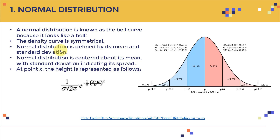The standard deviation is basically the dispersion from the mean — how the curve is dispersed around it. If you have a very small standard deviation, all the data accumulates around the mean. If you have a large standard deviation, the data is dispersed away from the mean. So the normal distribution is centered about the mean, and the standard deviation indicates its spread.